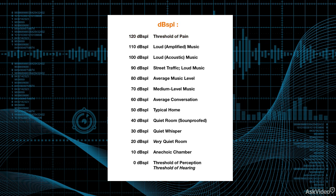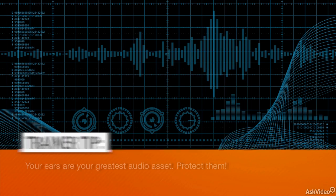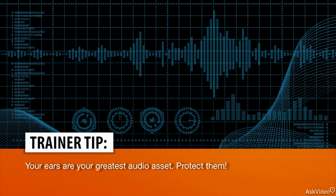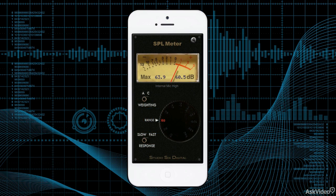Many engineers recommend setting the average listening levels in the studio—especially when mixing—to approximately 83 dB SPL, more or less. Since long-term exposure to continuous high sound pressure levels can gradually ruin your hearing, this is very good advice. You can take a measurement like this with a simple SPL meter, available inexpensively through places like Radio Shack or even as an app for your iPhone or smartphone.